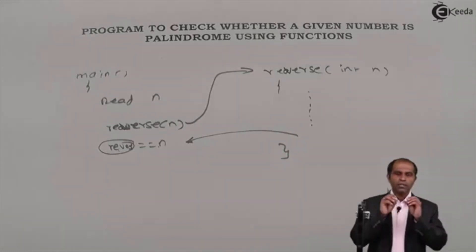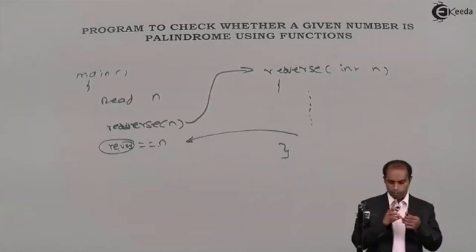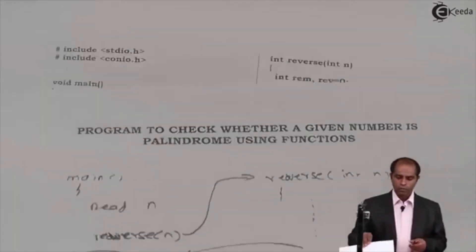We will not be writing a function called as palindrome but I will be writing a function called as reverse where the reverse of the number is going to be obtained. Let us see the code in this particular program.